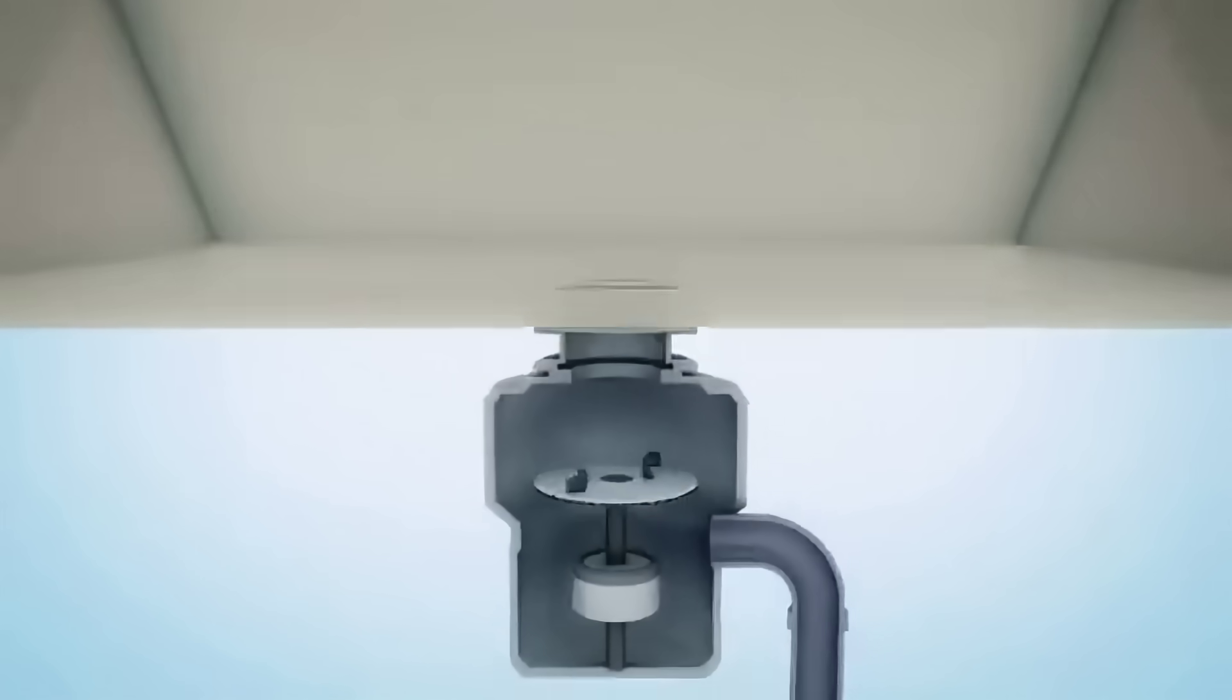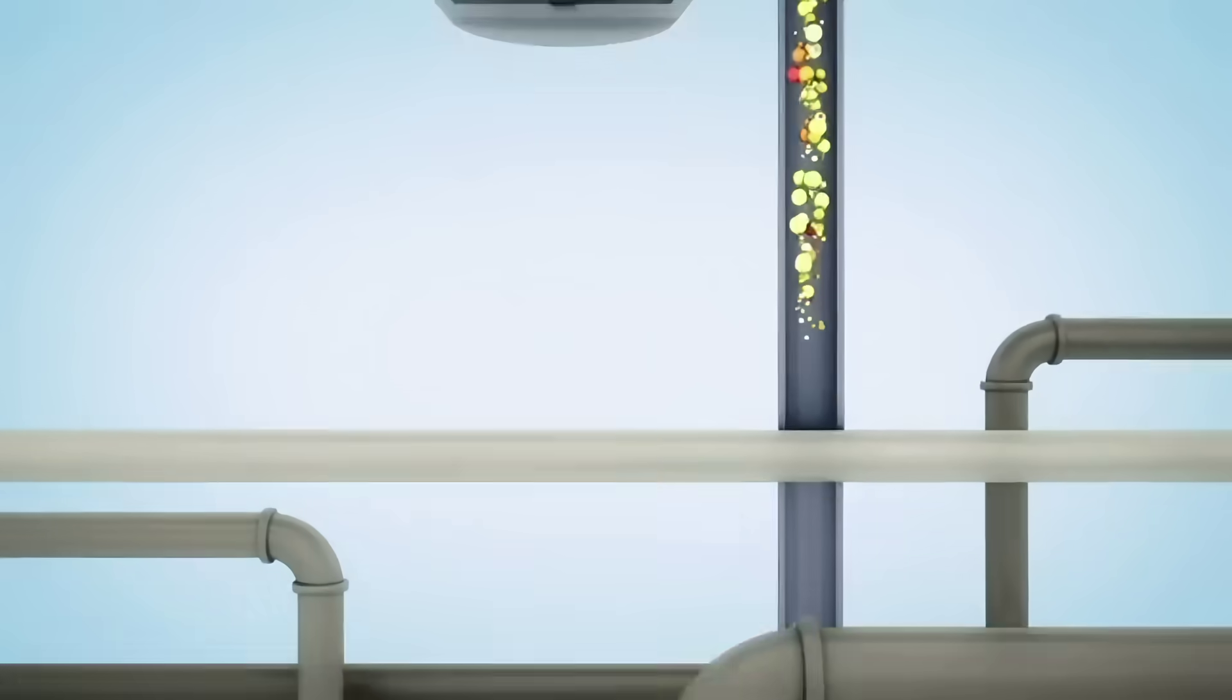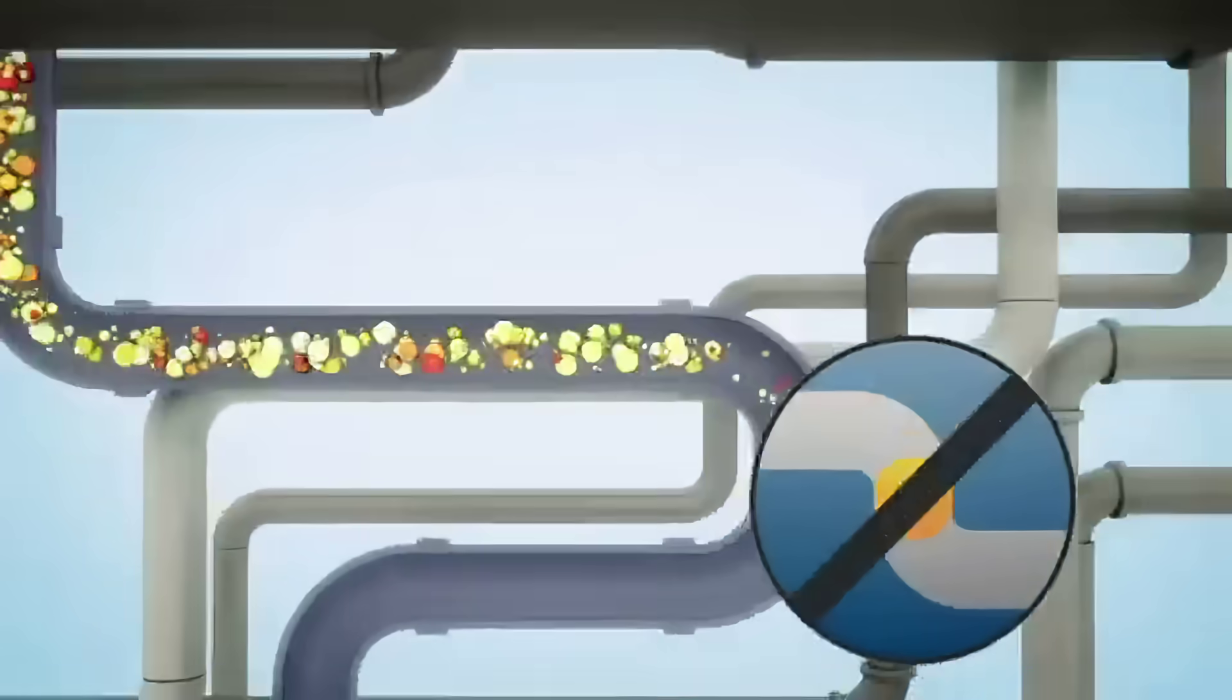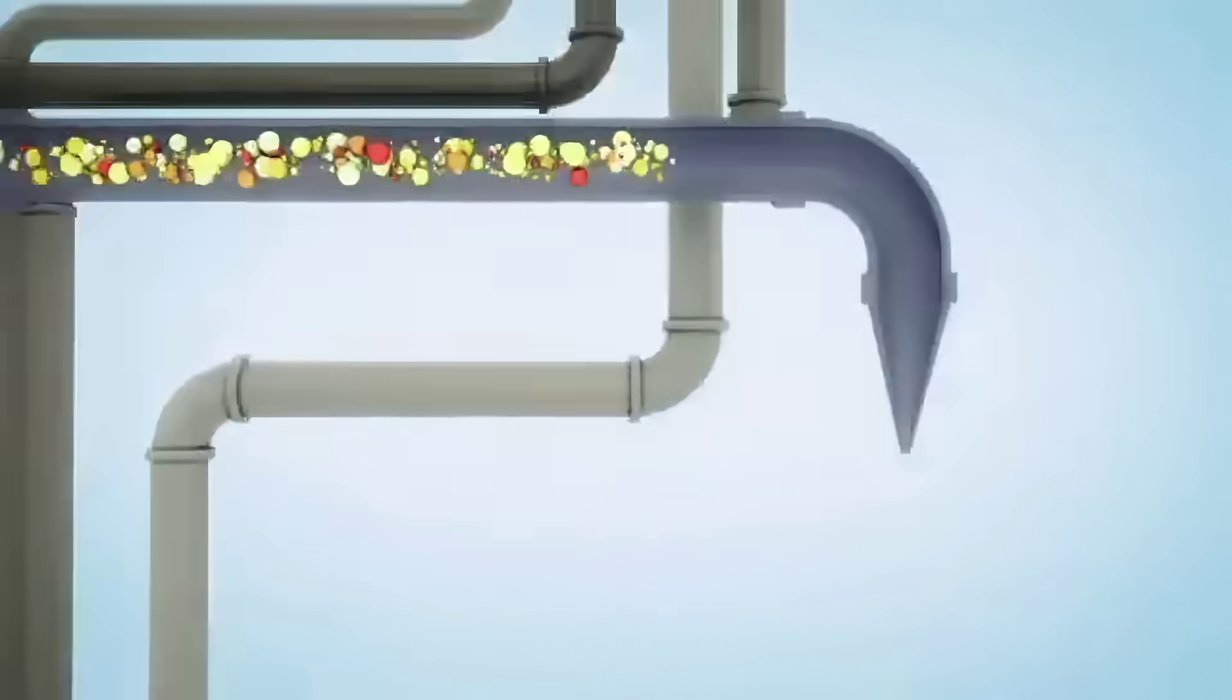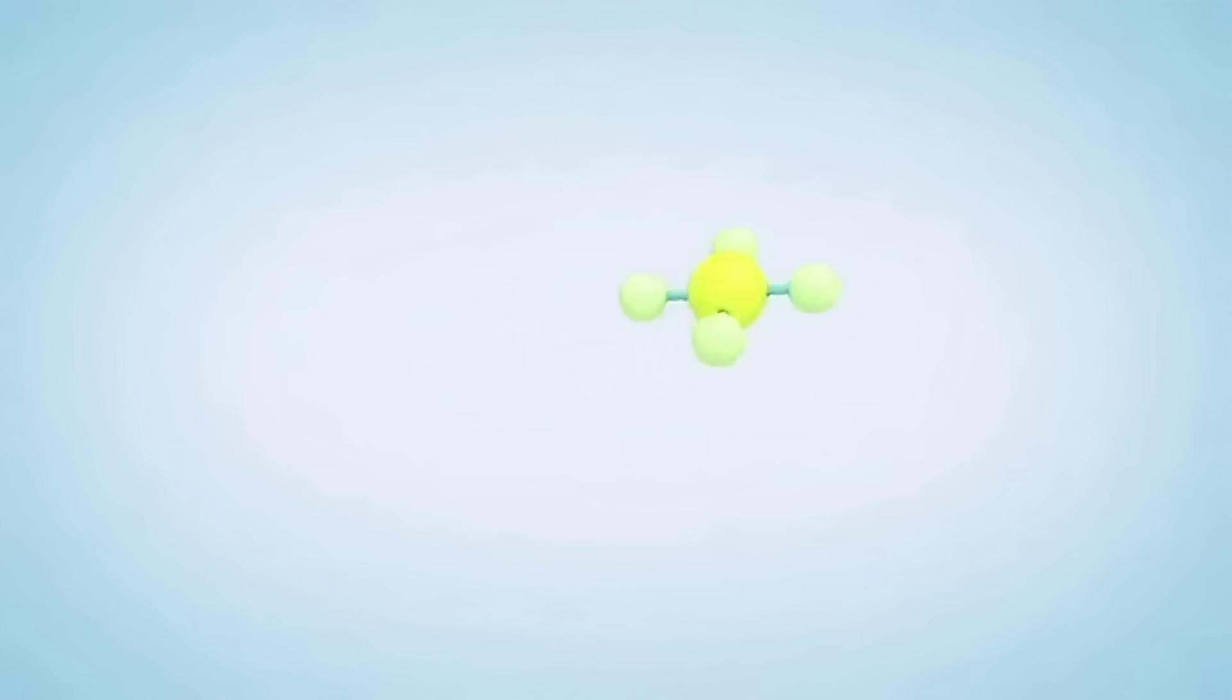Emerson's InSinkErator Disposal efficiently grinds almost all scraps from bananas to bones, without clogs or jams. That's a lot more food waste that's kept out of the landfills and more potential methane kept out of the atmosphere.